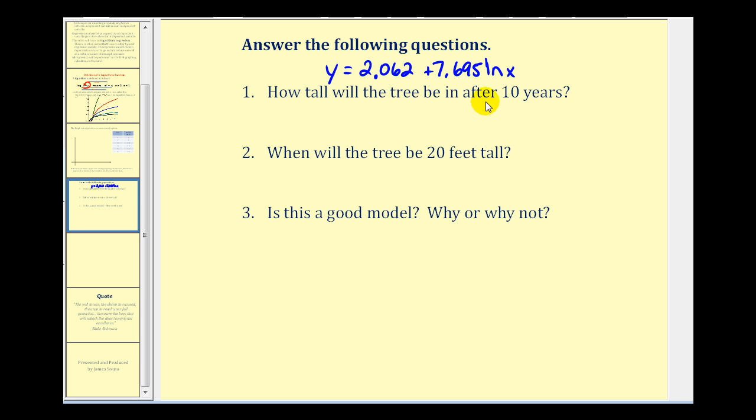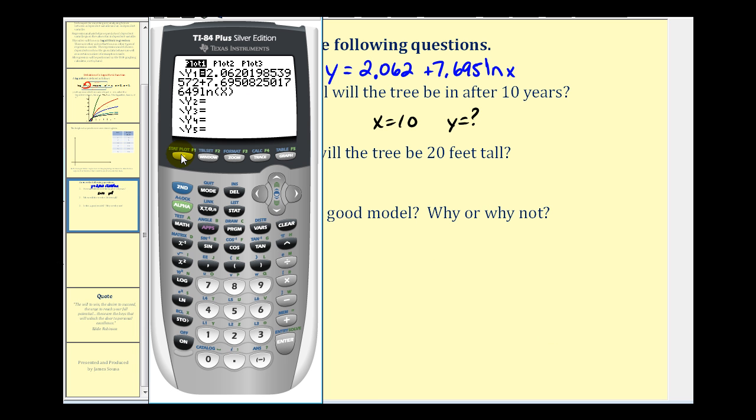First question is, how tall will the tree be in 10 years? Remember, x is the number of years and y represents the height of the tree. For this question we want to know, when x equals 10, what would the y value be? Since we have the equation already stored in y1, from the home screen we can press vars, right arrow once, enter, and enter to select y1. Then using function notation we want y1 of 10, so we just put a 10 in parenthesis. This will give us the y value when x is 10. We can see the height of the tree will be approximately 19.8 feet according to our model after 10 years.